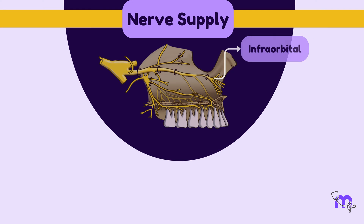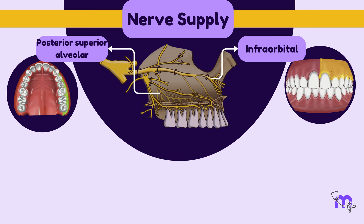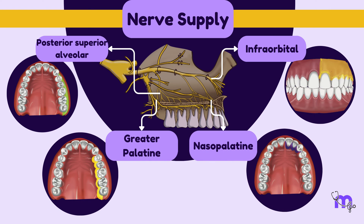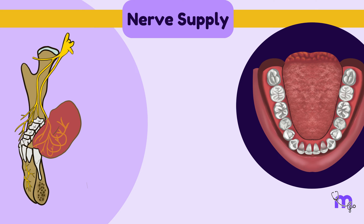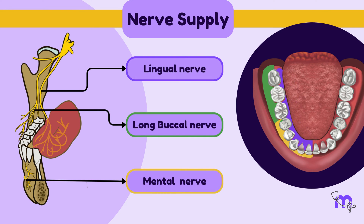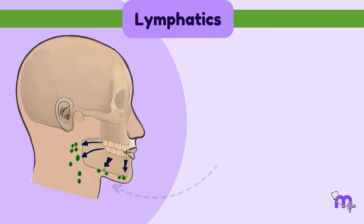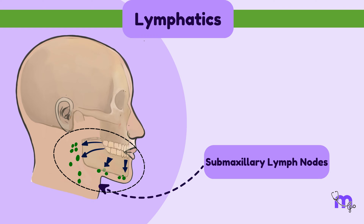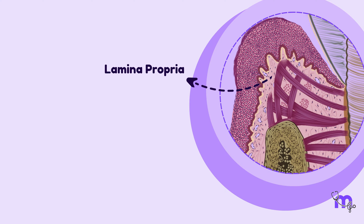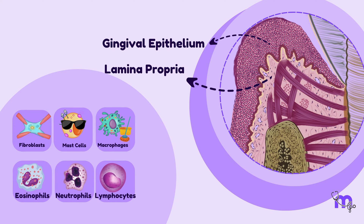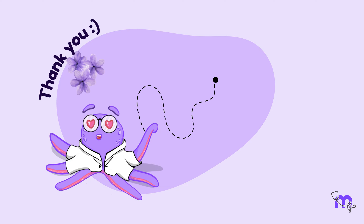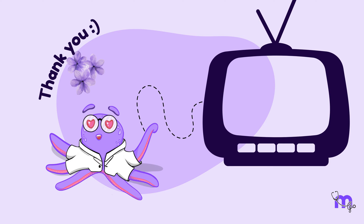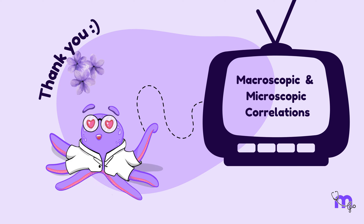This brings us to our last segment. The maxillary teeth are supplied by the posterior superior alveolar, greater palatine, and nasopalatine nerves, while the mandibular teeth rely on mental, long buccal, and lingual nerves. Regarding lymphatics, they drain into the submaxillary lymph nodes. To conclude, lamina propria is like a supportive cushion beneath our epithelium, with its own set of workers and materials that ensure everything stays in place and functions well. In our next video, we will learn how to correlate the microscopic with macroscopic features. Till then, keep it simple!